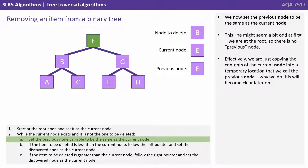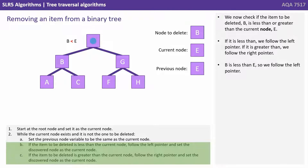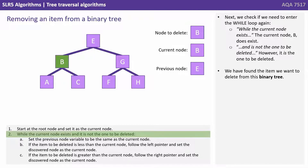Why we do this will become clear later on. We now check if the item to be deleted B is less than or greater than the current node E. If it's less we follow the left pointer; if it's greater we follow the right pointer. B is less than E so we follow the left pointer. We check if we need to enter the while loop again. The current node B does exist and is the one to be deleted. So we've now found the item we want to delete from this binary tree.